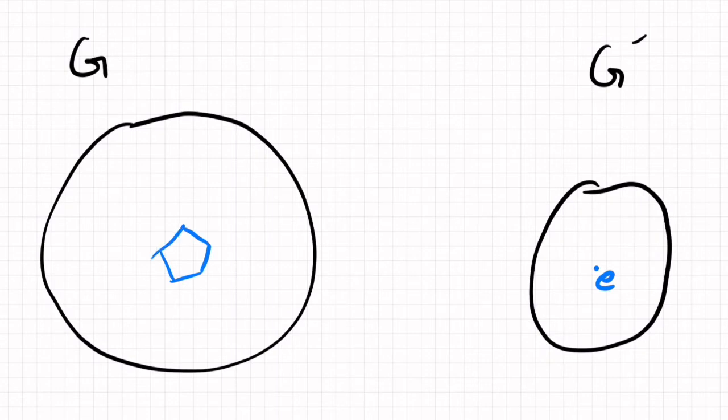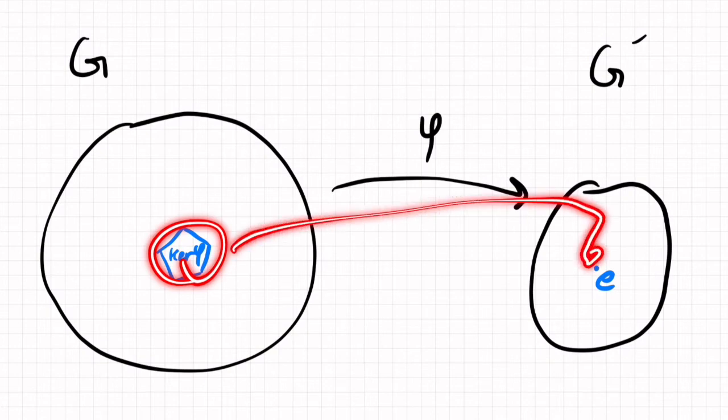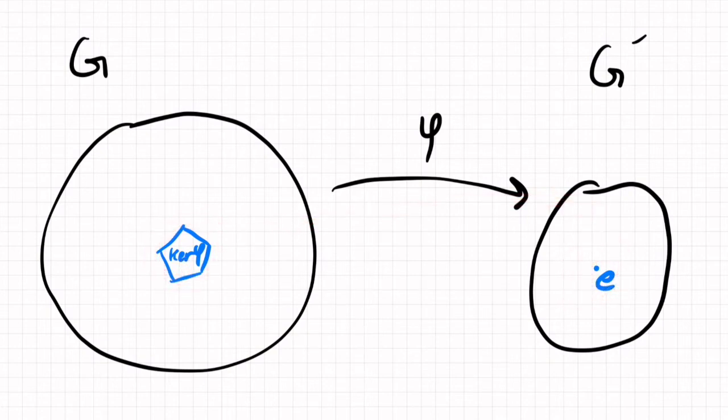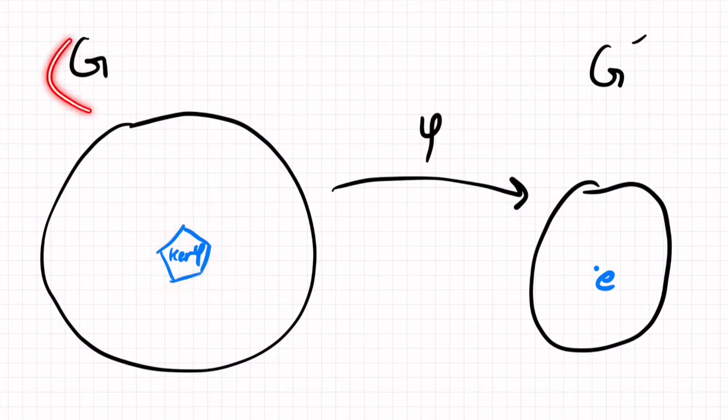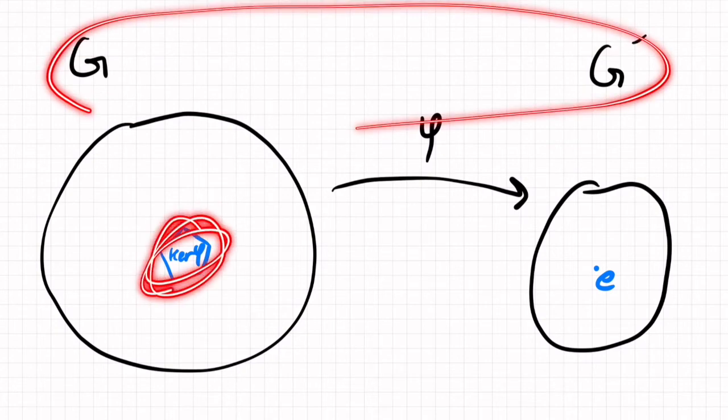because this is a surjective map. And then we're going to have the identity element in G prime, and over here we're going to have some subgroup, which is kernel phi, that's k. So there's a map between these sets, and that's phi. The kernel will map to the identity by definition of kernel.